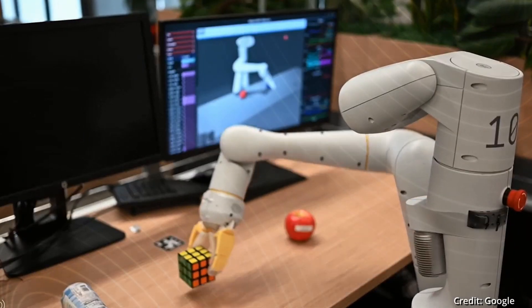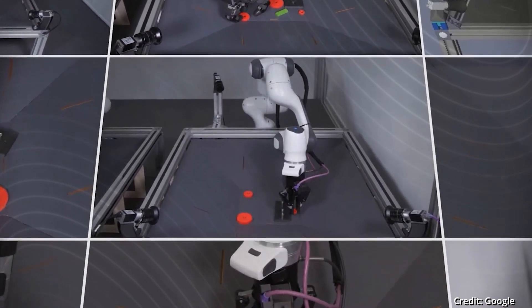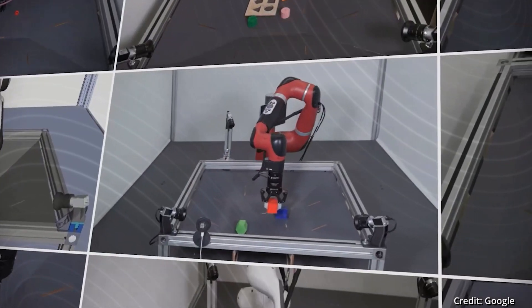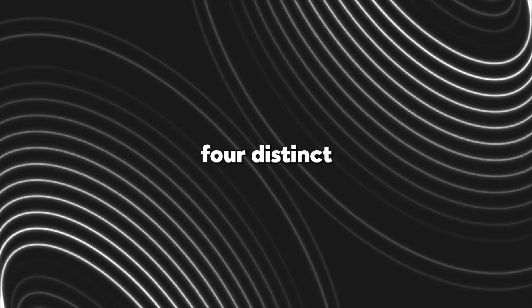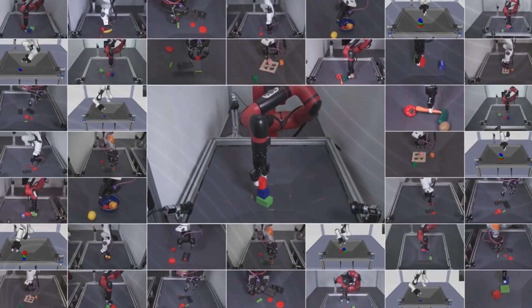During a series of experiments conducted by DeepMind, RoboCat accomplished the remarkable feat of learning and executing 253 tasks across four distinct types of robots.